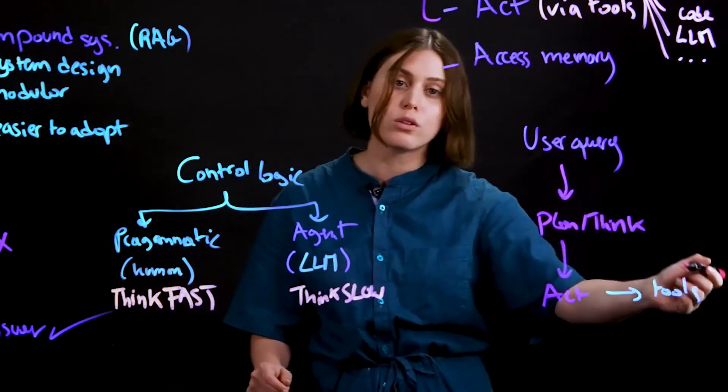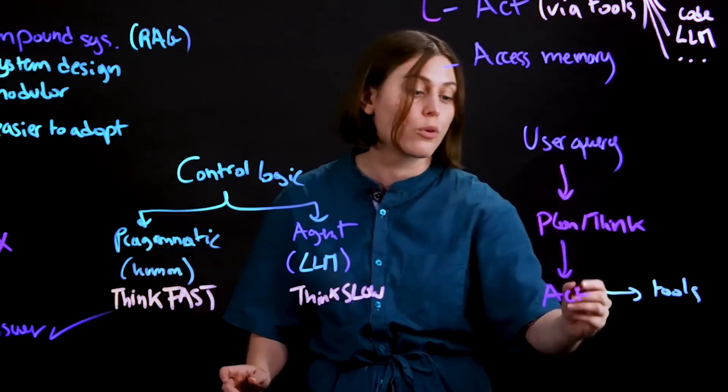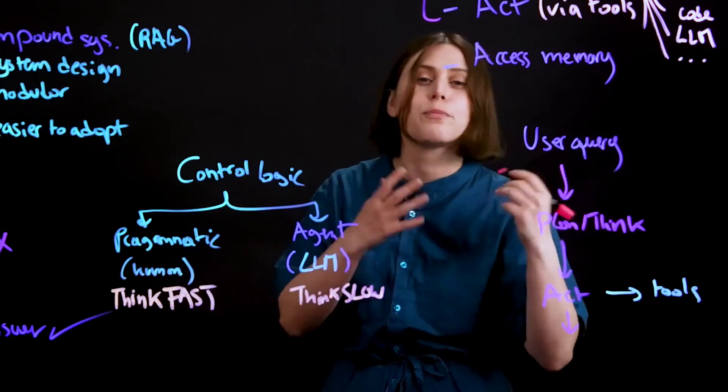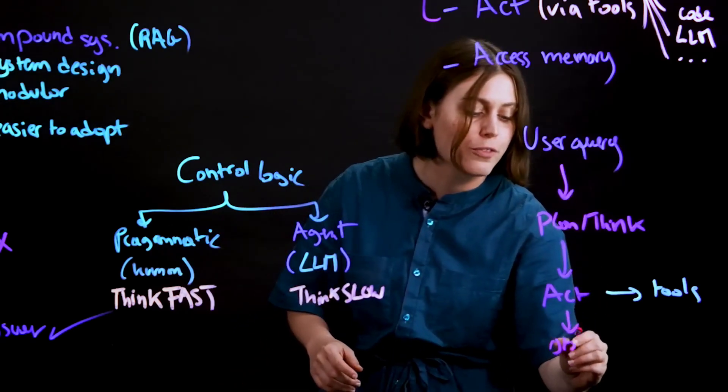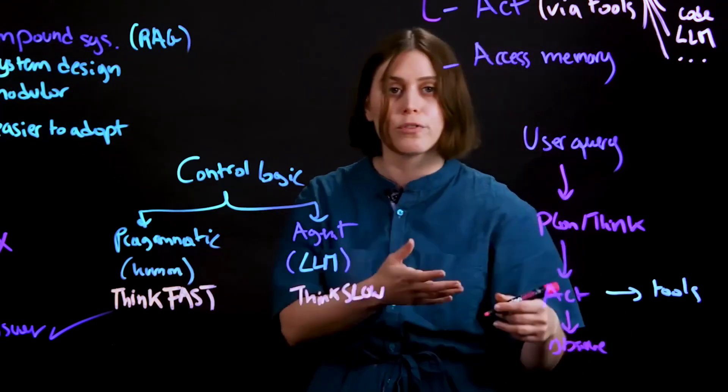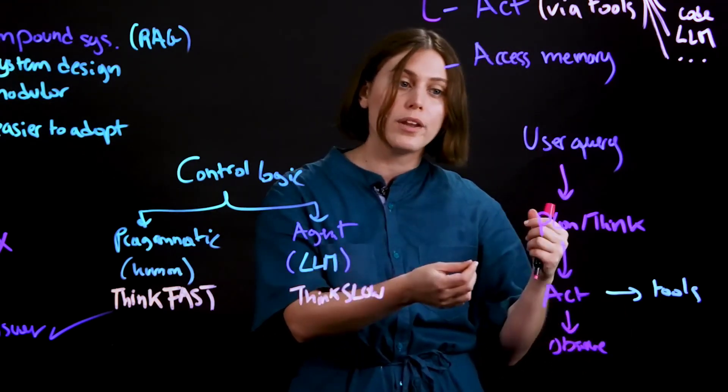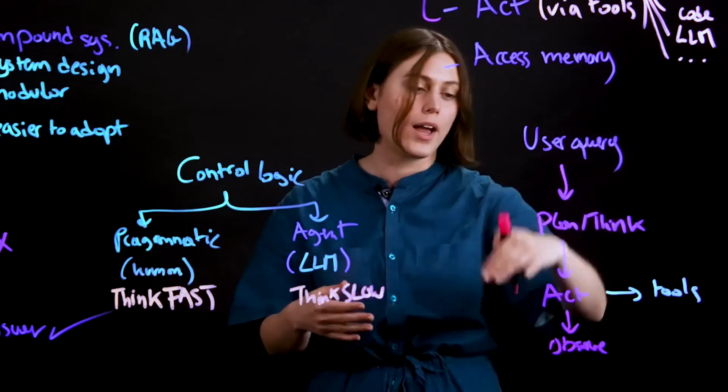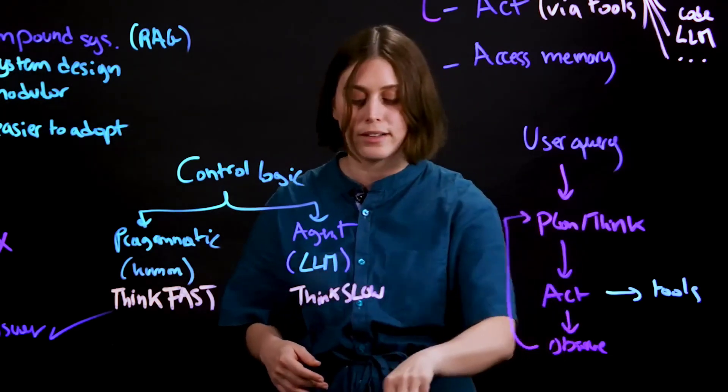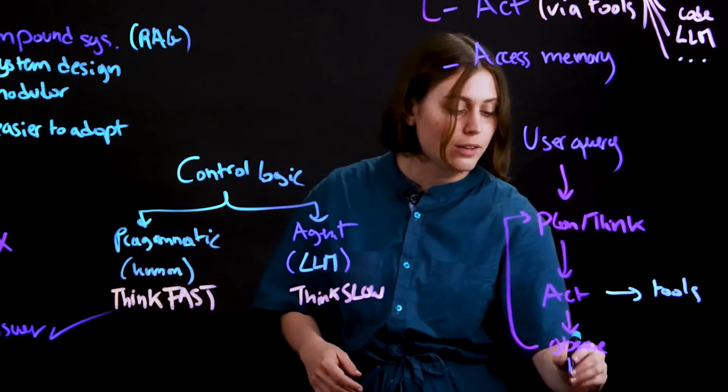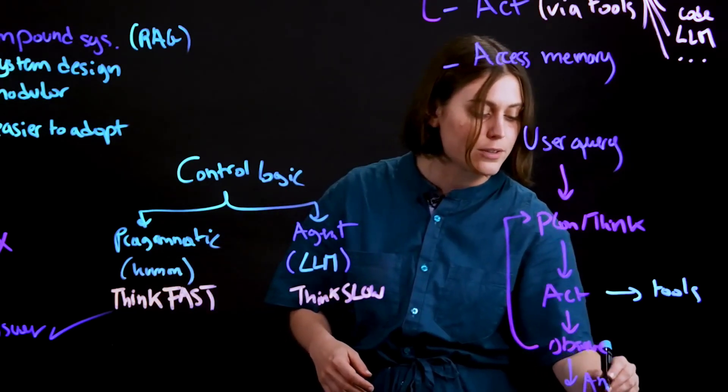Once you call a tool and you get an answer, maybe it gave you the wrong answer or it came up with an error, you can observe that. The LLM would observe the answer, would determine if it does answer the question at hand or whether it needs to iterate on the plan and tackle it differently, up until I get to a final answer.